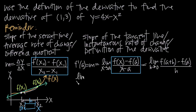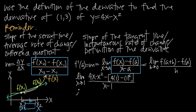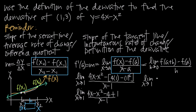We take the limit as x goes to 1 of f of x minus f of a, all divided by x minus a. f of x is our original function 4x minus x squared, and f of 1 means plugging 1 into the function: 4 times 1 minus 1 squared. Dividing by x minus 1, we simplify to get the limit as x approaches 1 of negative x squared plus 4x minus 3 divided by x minus 1.